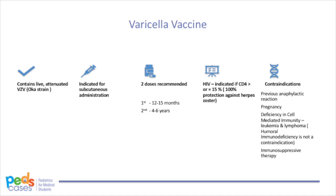Given the significant complications of varicella, a highly effective vaccine was developed to prevent it. By 2007, every province in Canada adopted universal vaccination for varicella. The vaccine is a live attenuated vaccine administered subcutaneously, with two recommended doses: first at 12 to 15 months of age, and second at 4 to 6 years, although in some provinces the second dose is given at 18 months. Contraindications include a previous anaphylactic reaction, pregnancy, and congenital immunodeficiency. In patients with HIV infection, the VZV vaccine is recommended if HIV is well controlled.